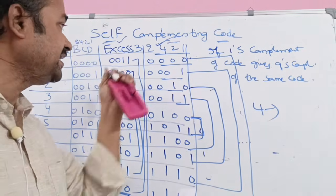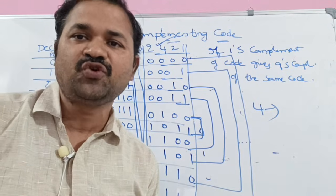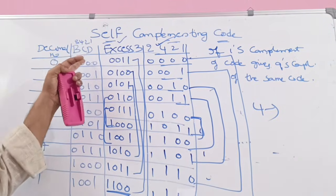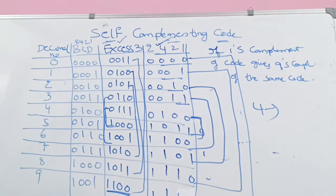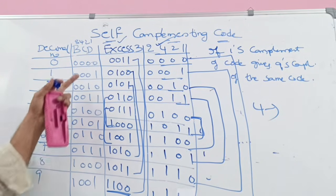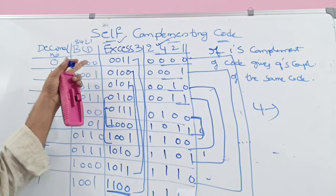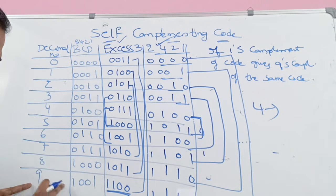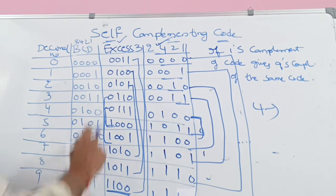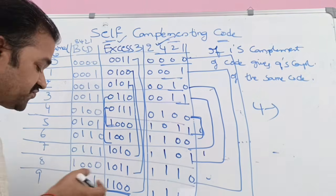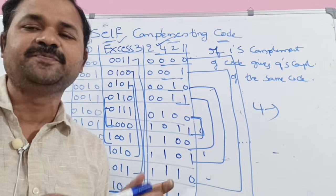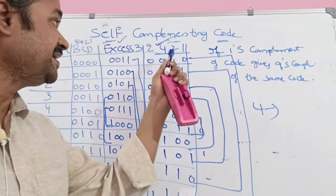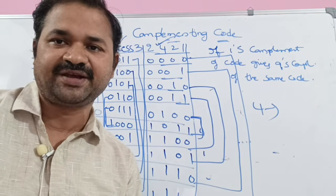So we can say that XS3 code as well as 2421 code are self-complementing codes. Whereas BCD 8421 is not a self-complementing code. Why? Because if we take 0, the 1s complement of 0000 is 1111 (all 1s). But the 9s complement of 0 is 9, whose 8421 code is 1001. Since 1111 and 1001 are not equal, BCD 8421 is not a self-complementing code. But BCD 2421 is a self-complementing code.